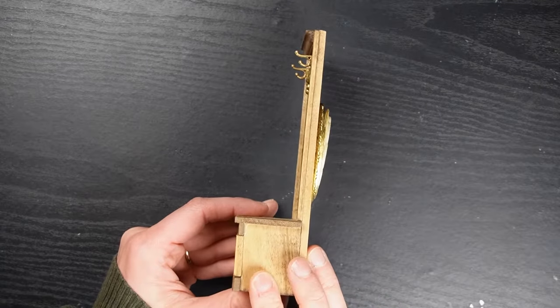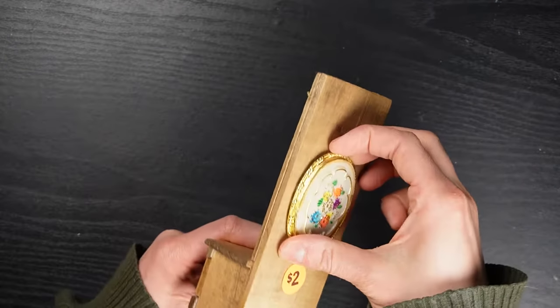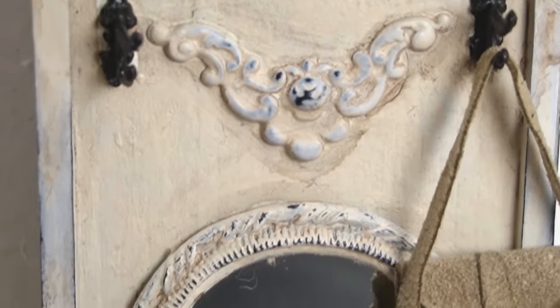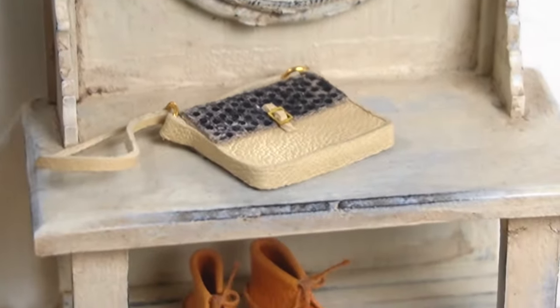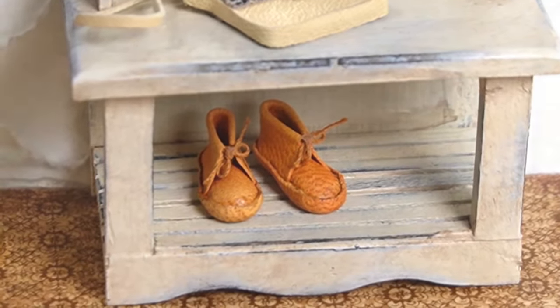Watch how I transformed this two dollar thrifted piece of furniture into a fantastic rustic farmhouse bench. I'll show you how I easily dismantled this glued piece of furniture, built a new base and gave it a rustic paint job.